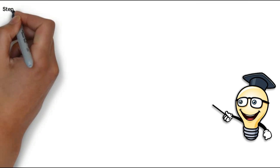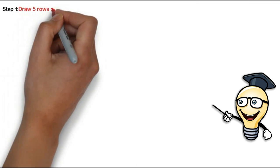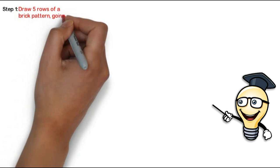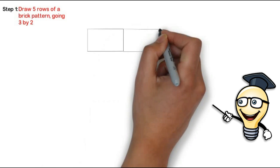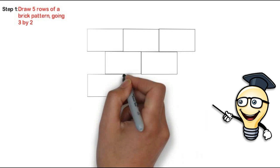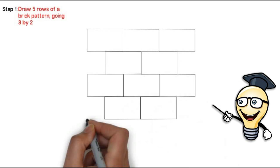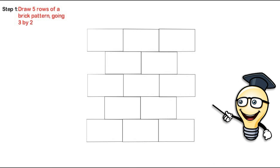Okay, so the first thing you want to do is to draw 5 rows of a brick pattern going 3x2. So we want 3 bricks in the first row, 2 bricks in the second row, 3 bricks in the third row, 2 bricks in the fourth row, and 3 bricks in the fifth row, and so on.